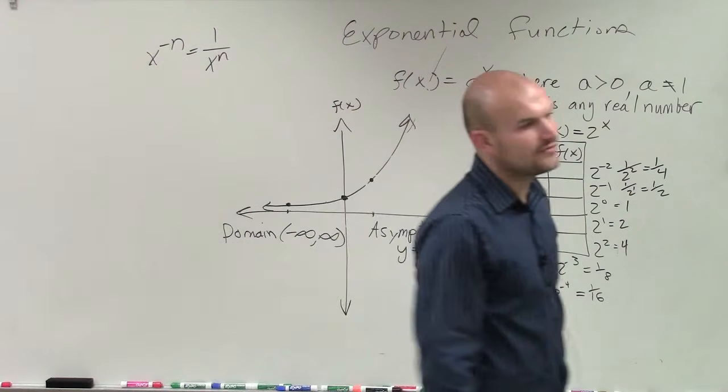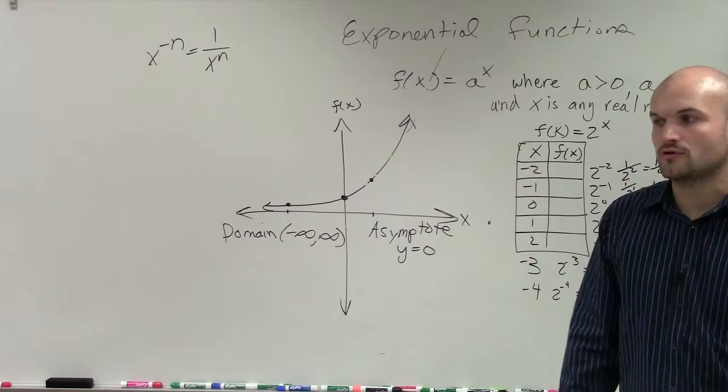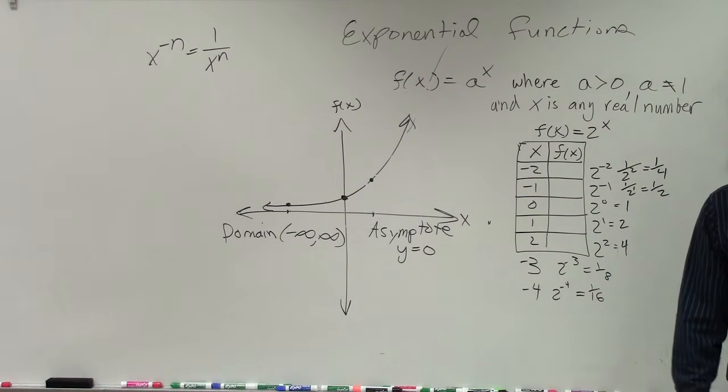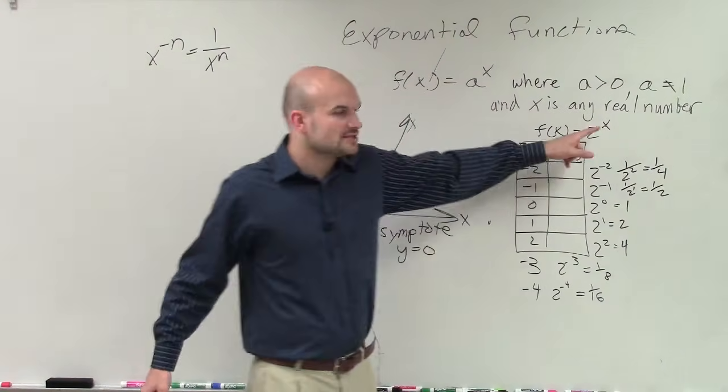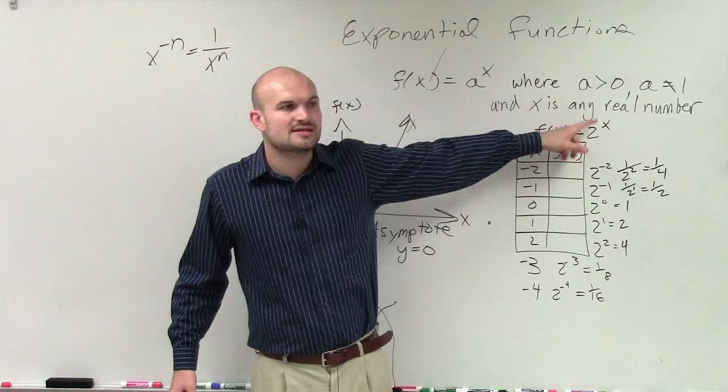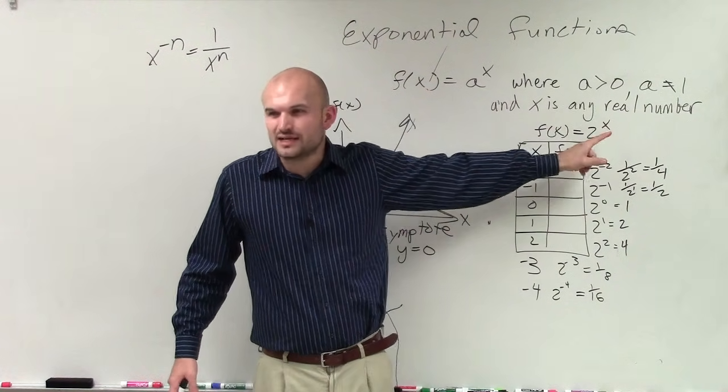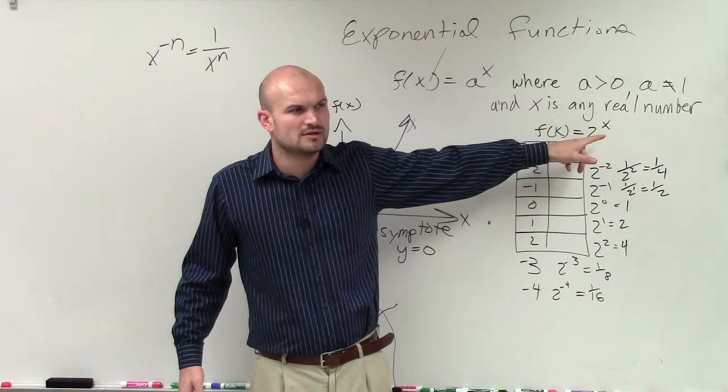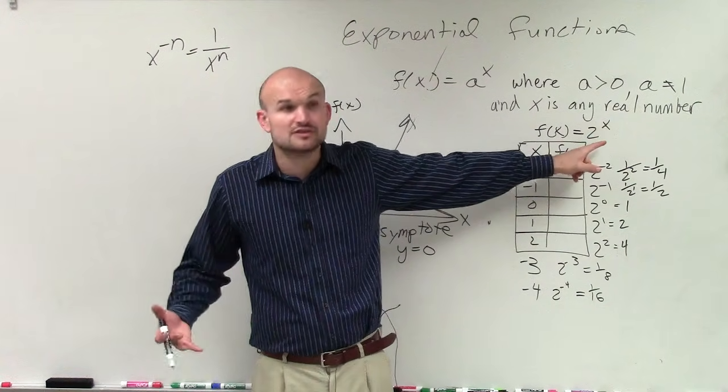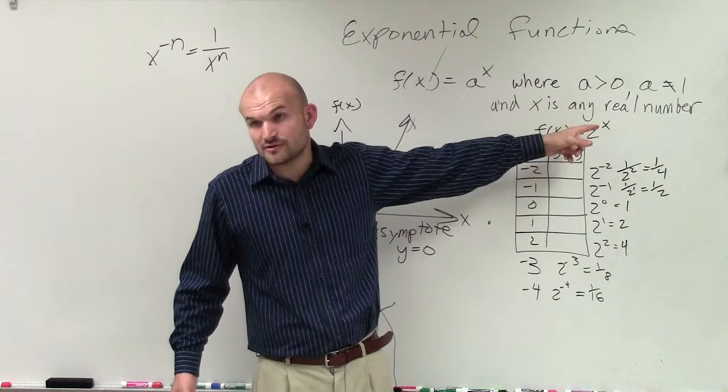So therefore, the domain is from negative infinity to infinity. And that's going to be true for all of your exponential functions. Every x value you plug in there, and let's put a case in there. Let's look at our function f = 2^x. Is there a number that you can think of that you cannot plug in for x that would make this equation not true? Is there a number you can't plug in for x? Obviously, the real number system, right? Because x is any real number.